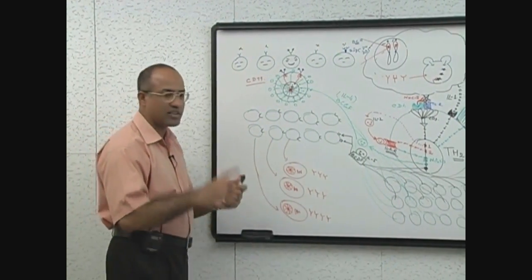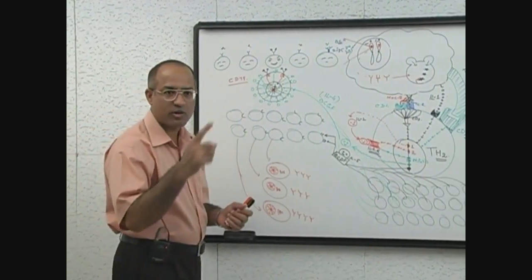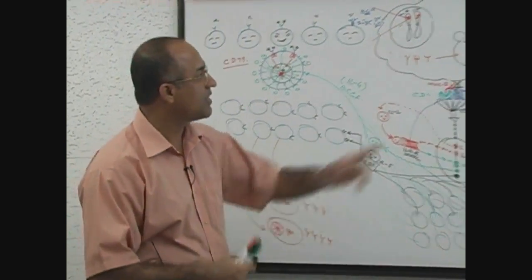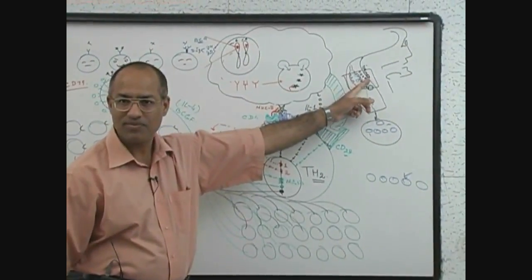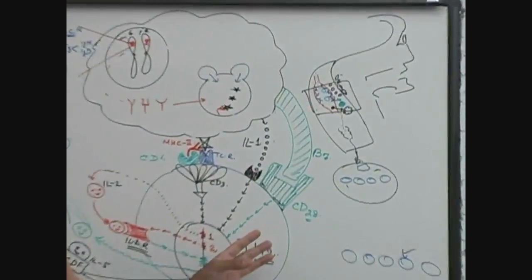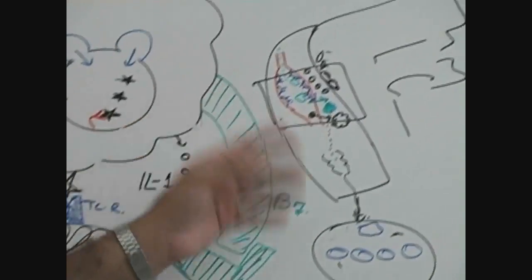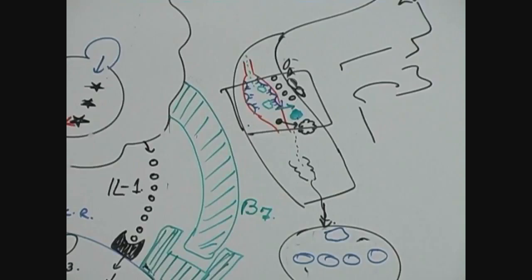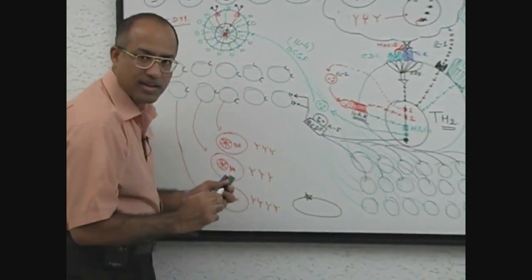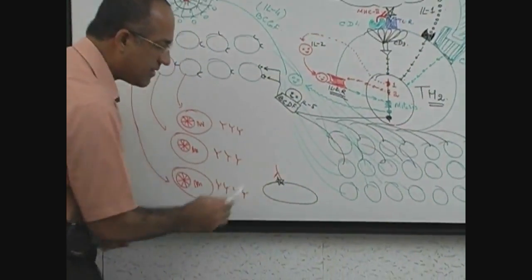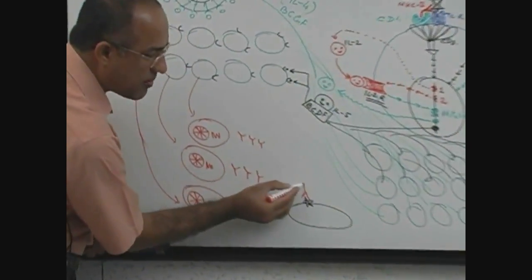These antibodies, through the circulation, eventually reach where the bacteria are. From the lymphoid system they come into the blood and antibodies reach over here. Let's suppose this is bacteria — this is the antigen. The antibody will react with the antigen and then the antibody will become active.